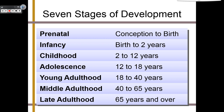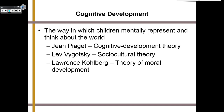The first thing we need to talk about is cognitive development — remember, cognitive equals thinking. It is the way in which children mentally represent and think about the world. The big names we're going to talk about are Jean Piaget and his cognitive development theory, Lev Vygotsky and his sociocultural theory, and Lawrence Kohlberg and his theory of moral development. They all have different ideas, and they've all been very influential.